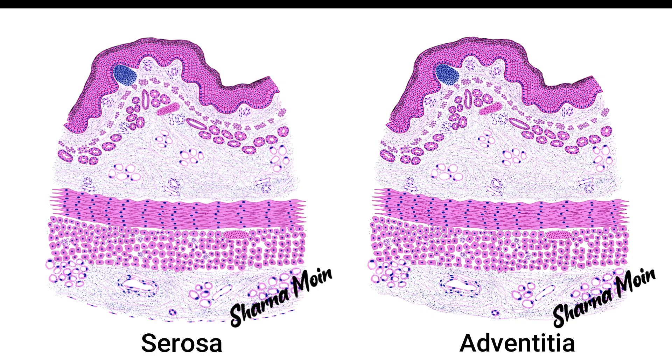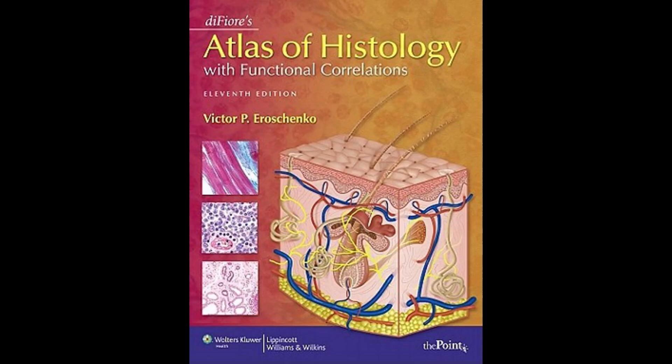Both adventitia and serosa are connective tissue layers, but the serosa is present only where the peritoneum is present and secretes serous fluid into the peritoneal cavity. The adventitia does not produce any serous fluid.